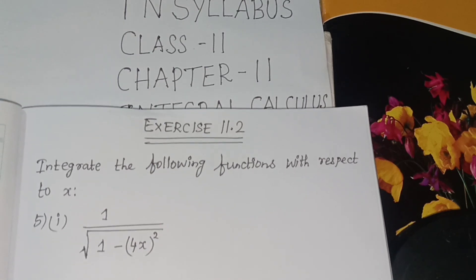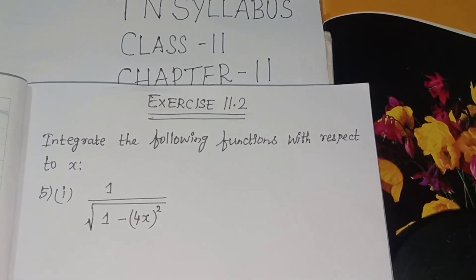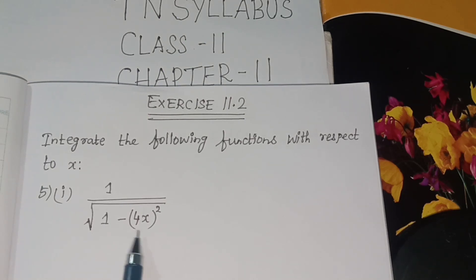Integrate the following functions with respect to x. Fifth sum: 1 divided by root 1 minus 4x whole square.